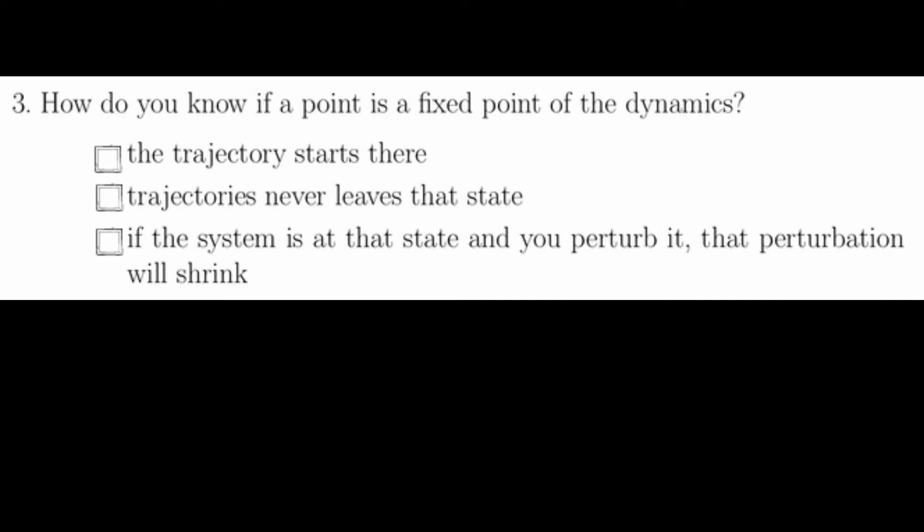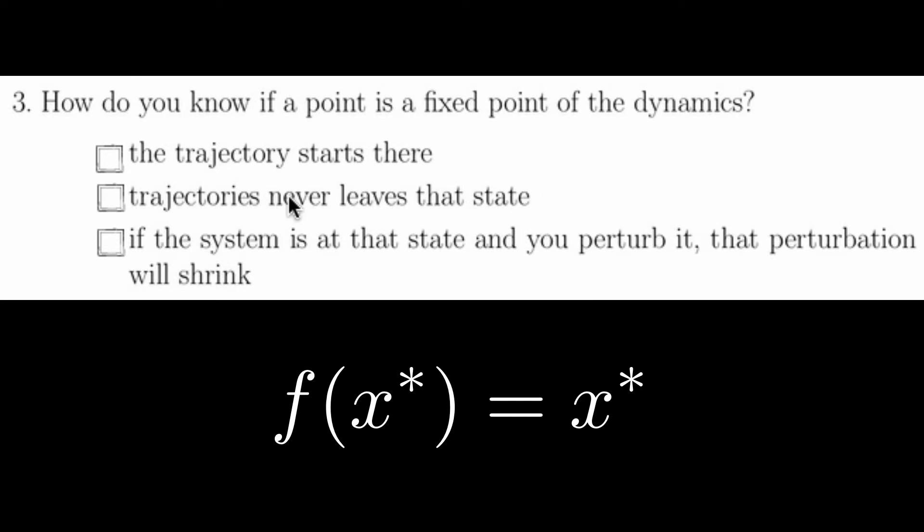The trajectory starting there is also not good enough, the trajectory must stay there. The definition of a fixed point is that the dynamics f takes the fixed point x star back to x star. That is, that once a trajectory has reached that state, a trajectory will never leave that state. So the answer to question three is that the trajectories never leave that state is a sufficient condition to tell us that we're at a fixed point of a dynamical system.